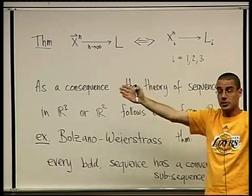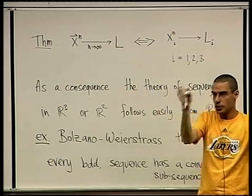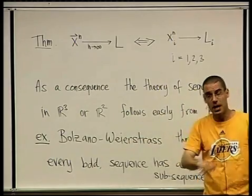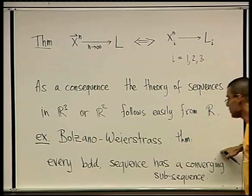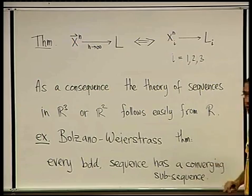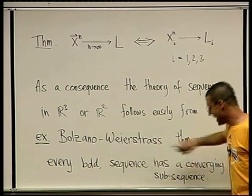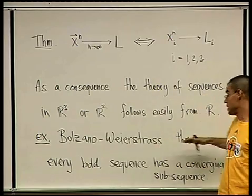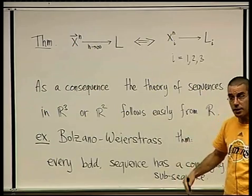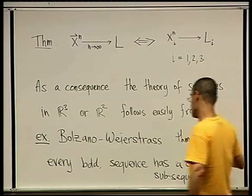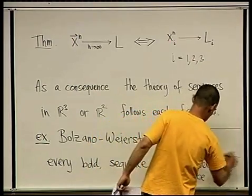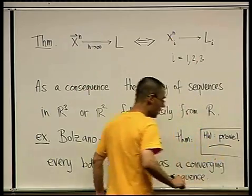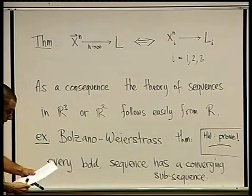So you have to start with the first component, the X component. It's a bounded sequence in R. Take a converging subsequence. Then take the Y's corresponding to that and take a converging subsequence of those and then do that for the Z's. So I'm going to leave this as a homework to try and formalize the proof of this. But it's really a three-line proof based on the analogous theorem in R. And the same goes for all the theory. You want even a very deep theorem, it would follow from the corresponding theorems for sequences in R. So this is going to be homework proof. I basically said everything you have to do. You just have to do it carefully.